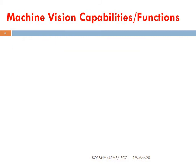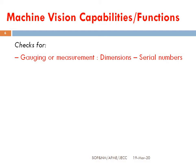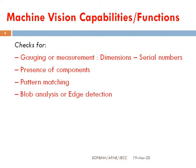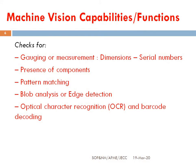Next, we are going to discuss the machine vision capabilities or functions. Machine vision is used for different purposes such as: gauging or measurement — measuring dimensions or checking serial numbers; presence of components — checking the physical presence of components; pattern matching — checking design considerations; blob analysis and edge detection — finding variations in design shapes; optical character recognition (OCR) and barcode encoding — barcode reading is a key example; surface inspection; and color analysis — used for testing different metals using color analysis methods.